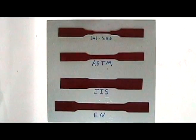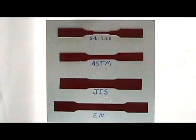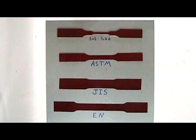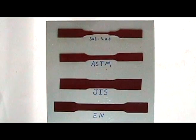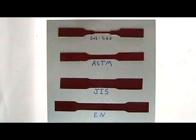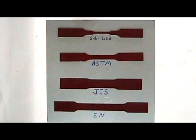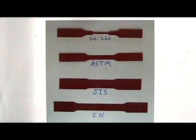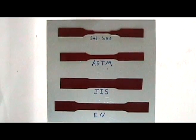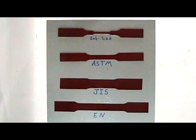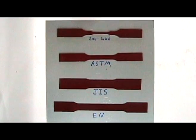The test specimen shape is determined by the standard or specification being utilized. For example, ASTM subsize, ASTM, GIS, and Uranorm.